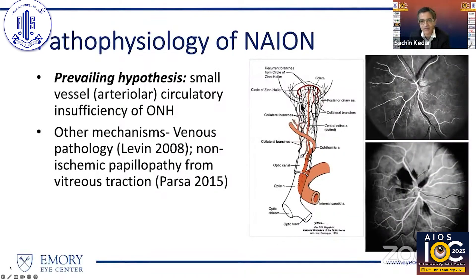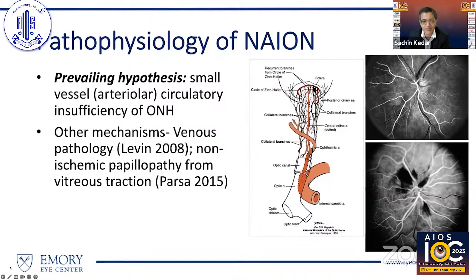The intraocular part of the optic nerve receives blood supply through paraoptic branches of the posterior ciliary artery from the circle of Zinn-Haller. From the work of the great Sohan Hayreh, we now think that non-arteritic anterior ischemic optic neuropathy is caused by arteriolar circulatory insufficiency at the optic nerve head. Other mechanisms have been proposed but not proven.